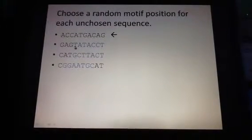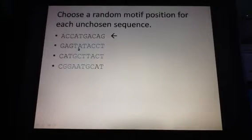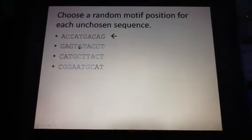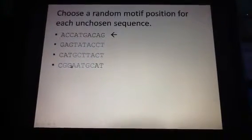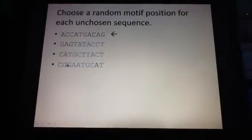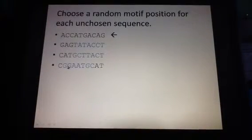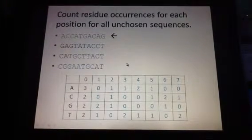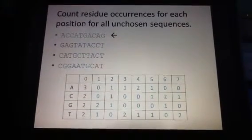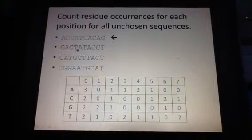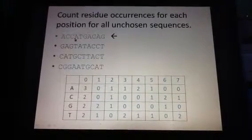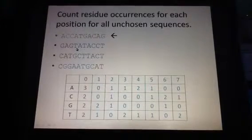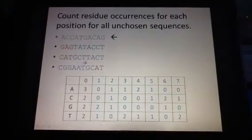For instance, for the second sequence, we randomly choose that the GATTACA motif exists in this region here. For the third sequence, we randomly chose that the GATTACA sequence is in this region here. And for the fourth one, we randomly chose that the GATTACA motif is in this region here, highlighted in blue. So now once we have chosen the sequence for sampling — in this case the first sequence — we have randomly chosen motif positions for each of the remaining unchosen sequences.